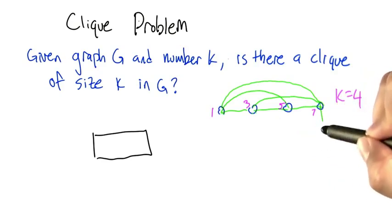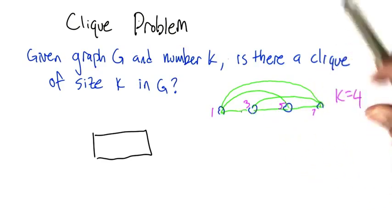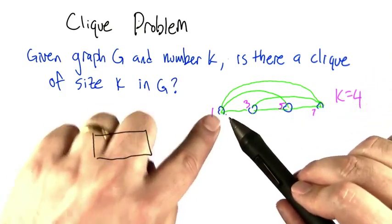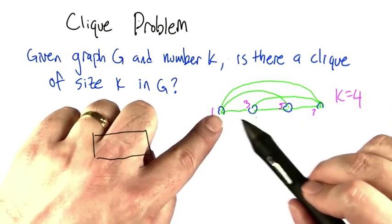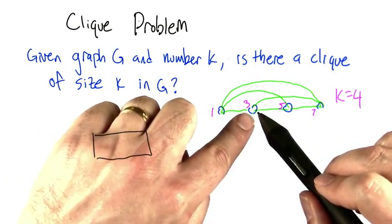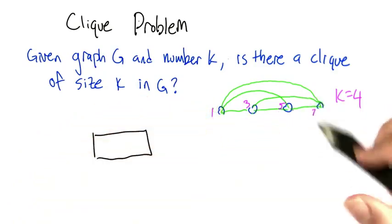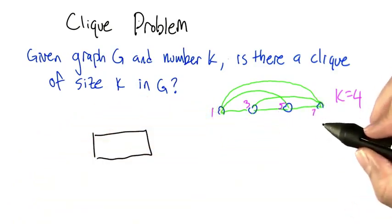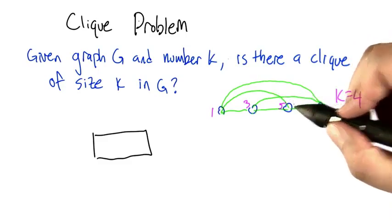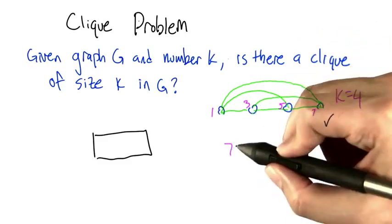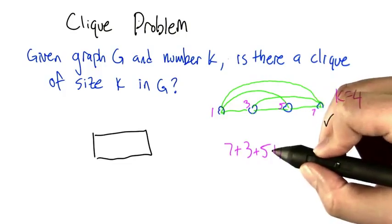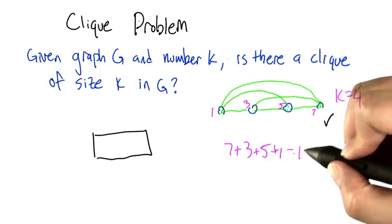The only possibility left is that these 4 nodes make up a 4-clique. That would mean 1 needs to be connected to 3, 5, and 7; 3 needs to be connected to 5 and 7; and 5 needs to be connected to 7 — which it is. So adding up these node numbers: 7 plus 3 plus 5 plus 1 is 16.